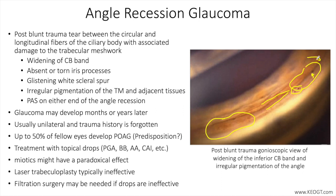It's also helpful to compare gonioscopy to the opposite eye if unaffected by trauma, and comparing the two will often reveal some of the subtle findings that may occur, similar to what you see here in the transition from a more normal angle to very obvious widening of the ciliary body band towards the left.